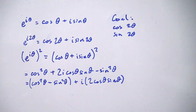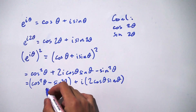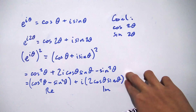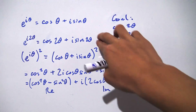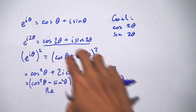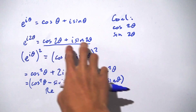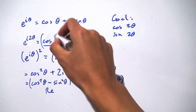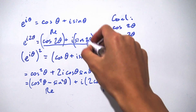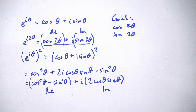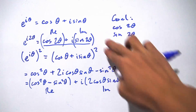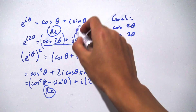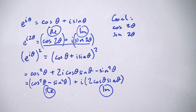Now notice that this real part and this imaginary part correspond to our original expression, where we had cosine of 2θ as the real part and sine of 2θ as the imaginary part. Since this expanded line equals our original line, the real parts must match up and the imaginary parts must also match up.